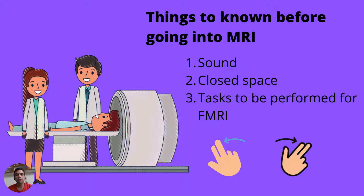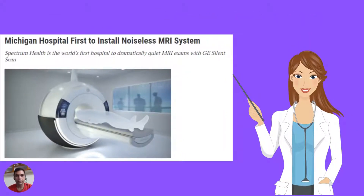Before going into the functional MRI you need to know a few things: it will be noisy and it will be a closed space. There are certain tasks you need to perform for identifying the functional cortex. For identifying the motor area you need to move your fingers finely. For identifying the speech area you need to count numbers without moving your head, as moving your head will lead to artifacts in the MRI. If you are scared of noise, Michigan Hospital has come up with a noiseless MRI system made by GE, which is now available in several parts of the world.